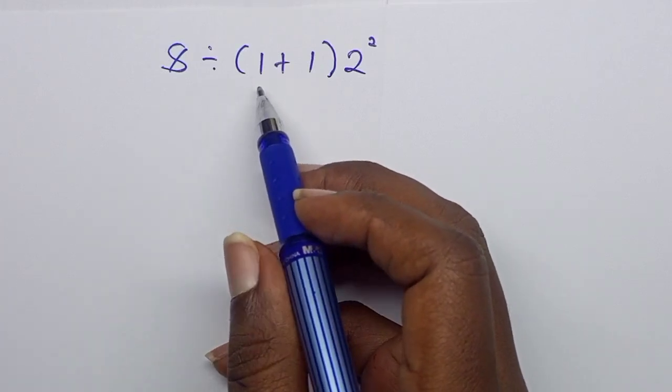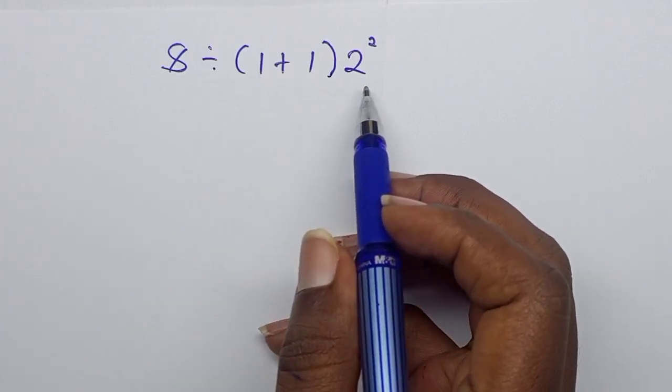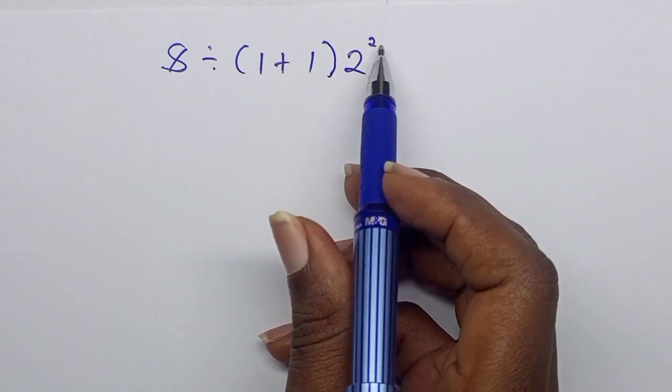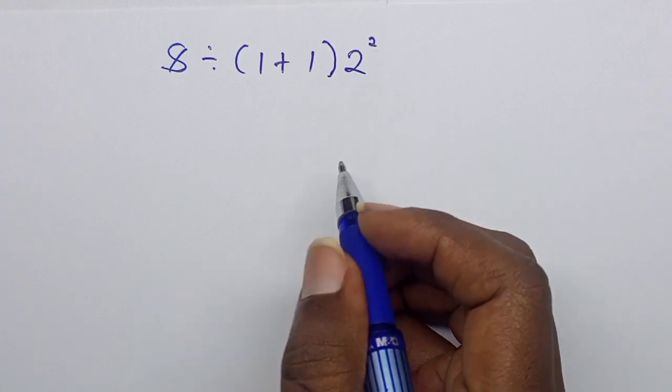8 divided by, in brackets, 1 plus 1 times 2 squared. What is the answer?